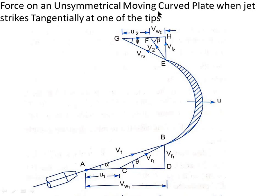Next is force on an unsymmetrical moving curved plate when the jet strikes tangentially at one of the tips. A jet of water strikes a moving curved plate, also called a vane, tangentially at one tip — we can consider the jet striking at point B. As the jet strikes tangentially, the loss of energy due to impact is zero. The relative velocity at inlet equals the vector difference of the velocity of jet and velocity of plate at inlet.